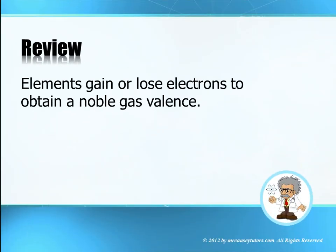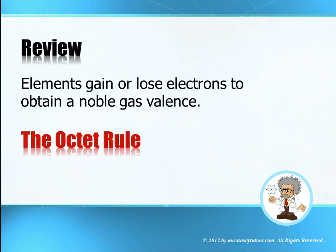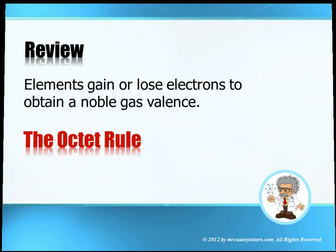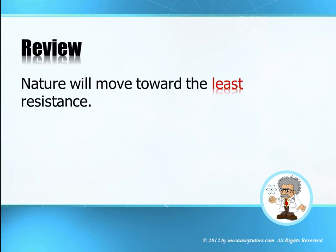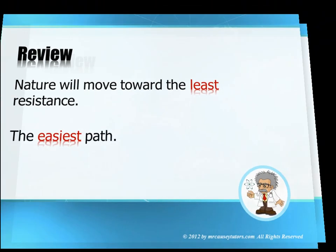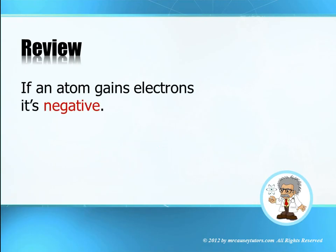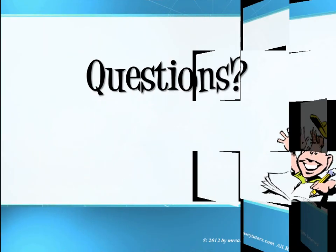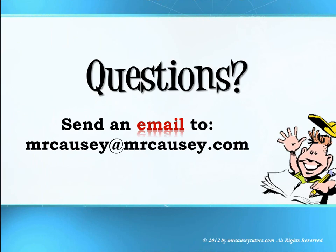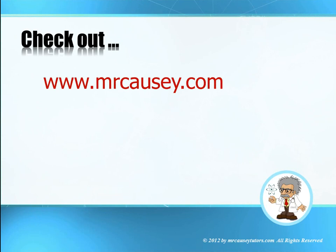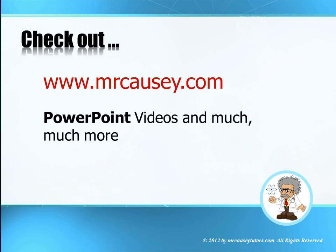Review: elements gain or lose electrons to obtain a noble gas valence — we call that the octet rule. Nature will move toward the least resistance, that is the easiest path. If an atom loses electrons, it's positive; if it gains electrons, it's negative. If you have any questions, as usual, send an email to MrKozzi at MrKozzi.com, and be sure to check out MrKozzi.com or MrKozziWorld.com for PowerPoint videos and much more. Be sure to subscribe to my YouTube channel.